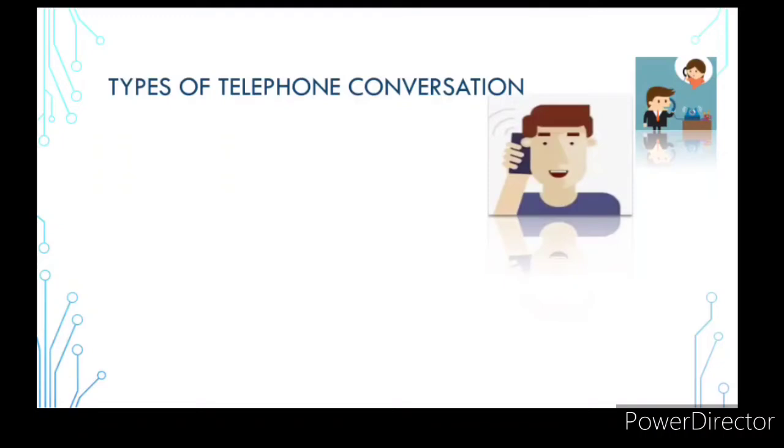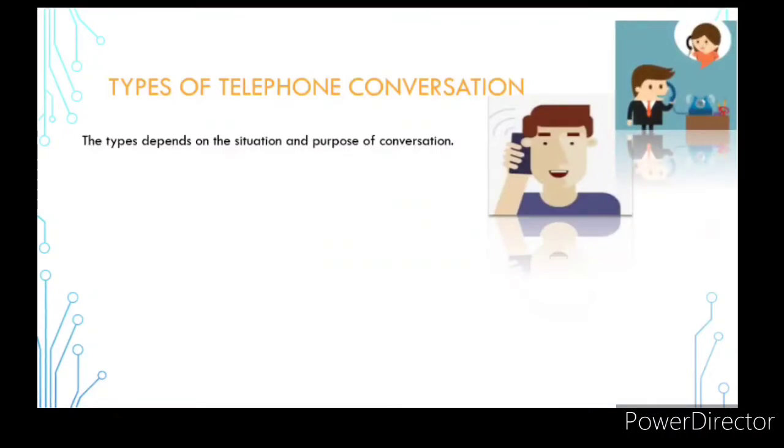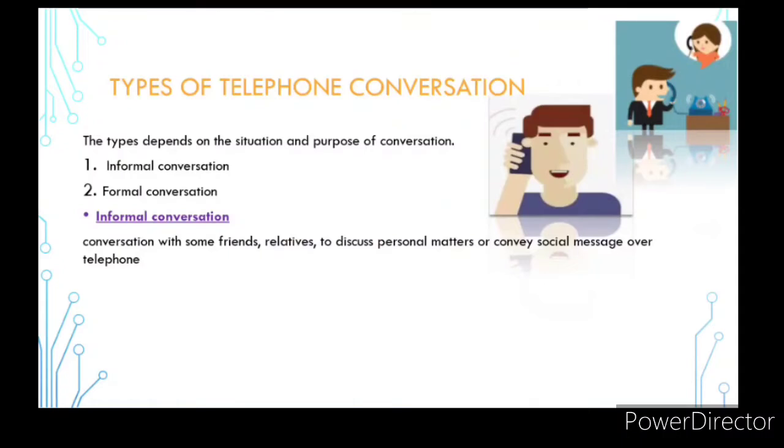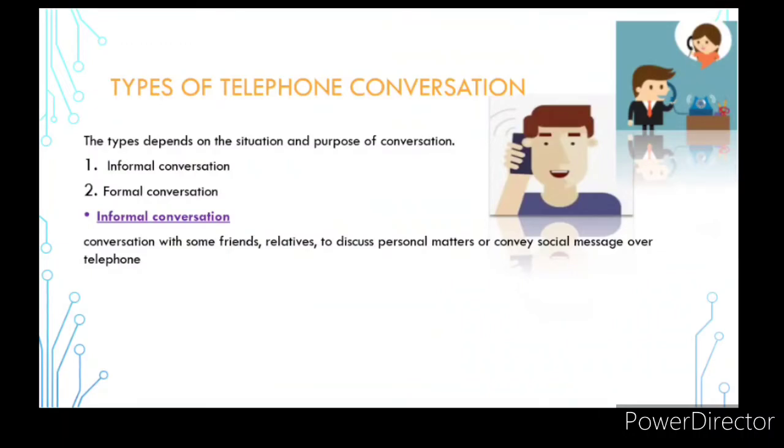Now, next is type of telephone conversation. What are the types of telephone conversation? So, telephone conversation depends on the situation and the purpose of the conversation. First type is informal conversation. Second, formal conversation. What is informal conversation? Conversation with friends, relatives to discuss personal matters and convey social messages over telephone.